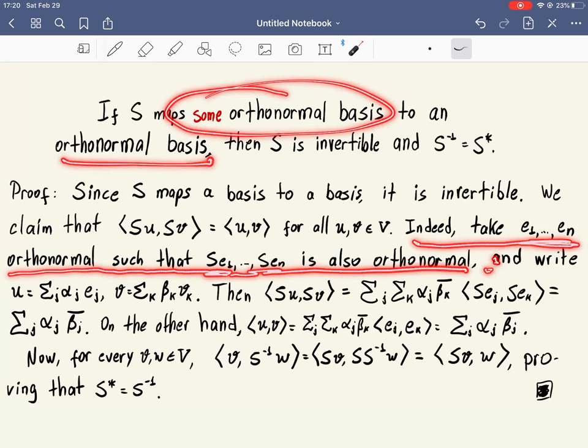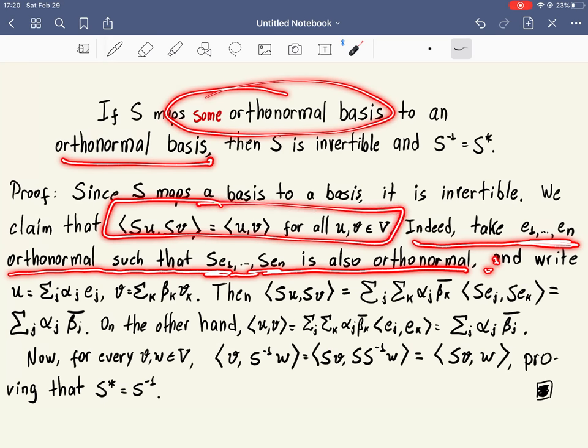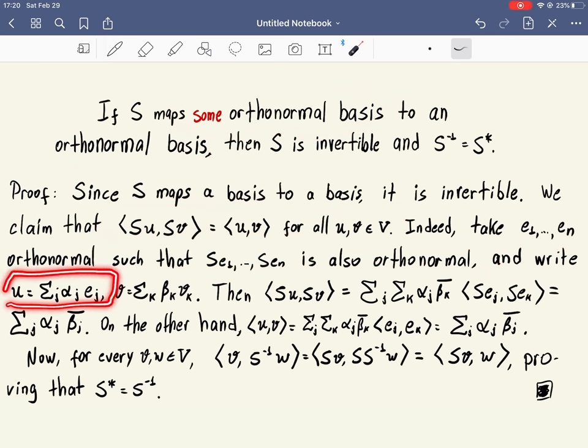And now, that's what we have to show. Write U as a linear combination of the basis, and V as a linear combination of the basis. I use different indices because when we write them in the same formula, it's very inconvenient to use the same index - it makes life complicated when we want to use linearity.